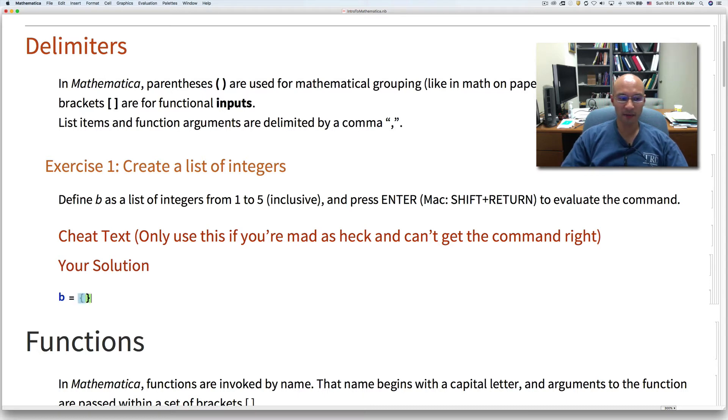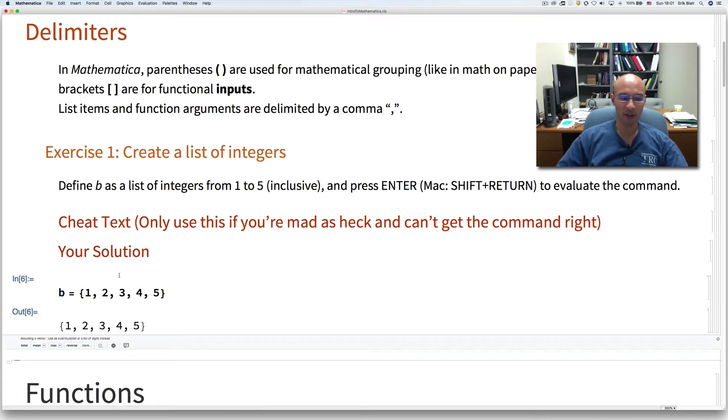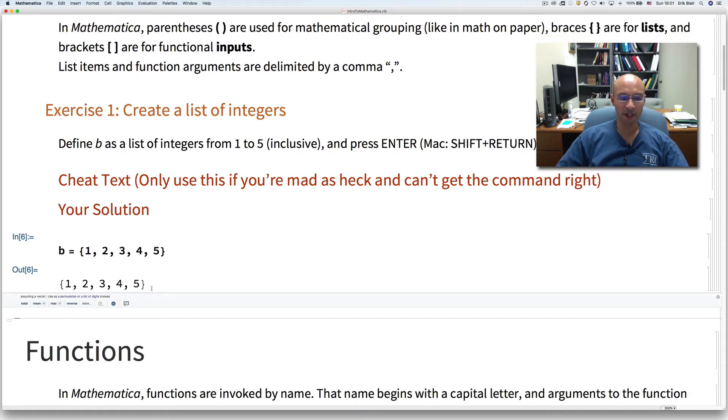And so now I use my delimiters for a list which are the brace and I type 1, 2, 3, 4, 5. And then if I hit shift enter to evaluate that on my Mac or just enter I believe on a Windows machine, Mathematica shows me the output.